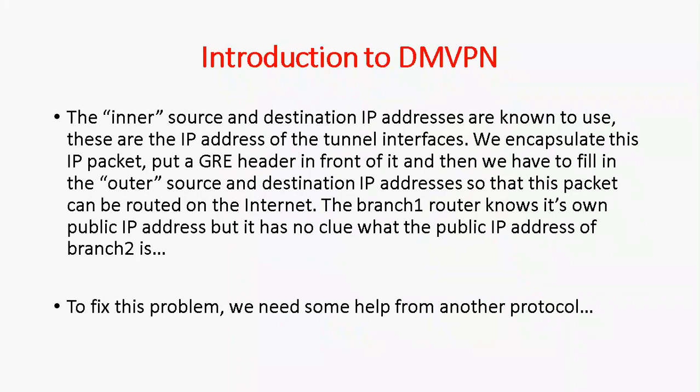To fix this problem we need help from another protocol — the Next-Hop Resolution Protocol (NHRP). Using NHRP, branch office 1 can figure out the public IP of branch office 2. Once it figures out the public IP, branch office 1 dynamically forms the tunnel between branch office 1 and branch office 2.